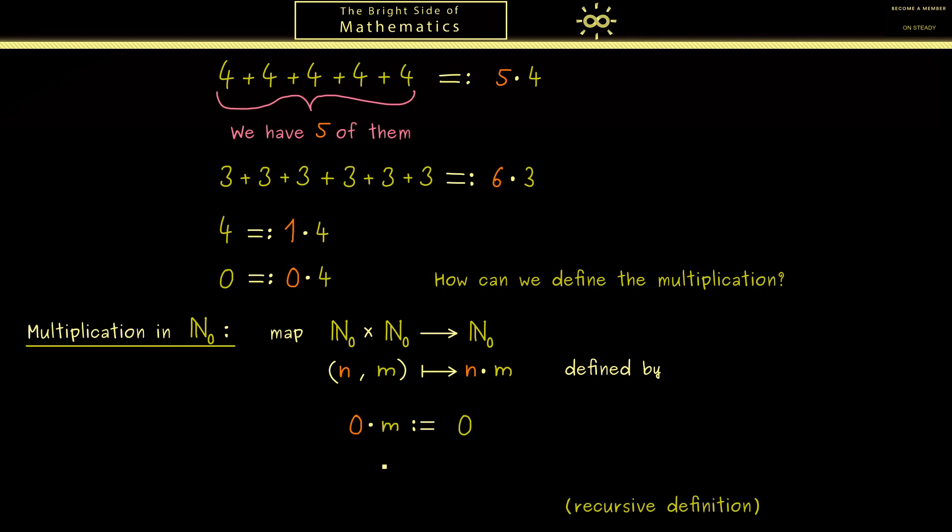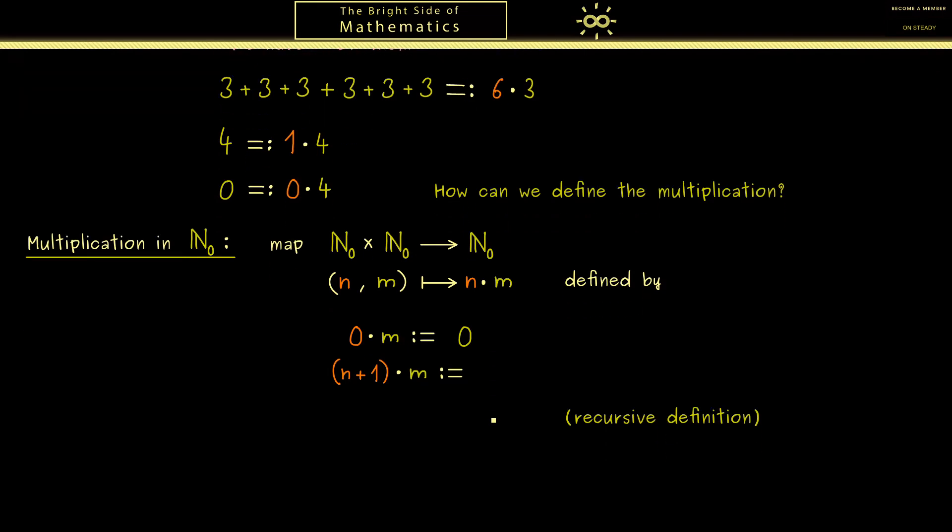Now the second ingredient we need would be something that tells us how the successor of n acts. In other words, are we able to define (n+1) times m. In order to do that let's look at an example to see what we actually want. Of course 5 times 2 should be just given by the sum of 5 2's. However when we now add another 2 we should get out 6 times 2. Not so surprising but here you should see the successor of 5, and on the other hand here we still have 5 times 2. And of course this is the recursive connection we searched for.